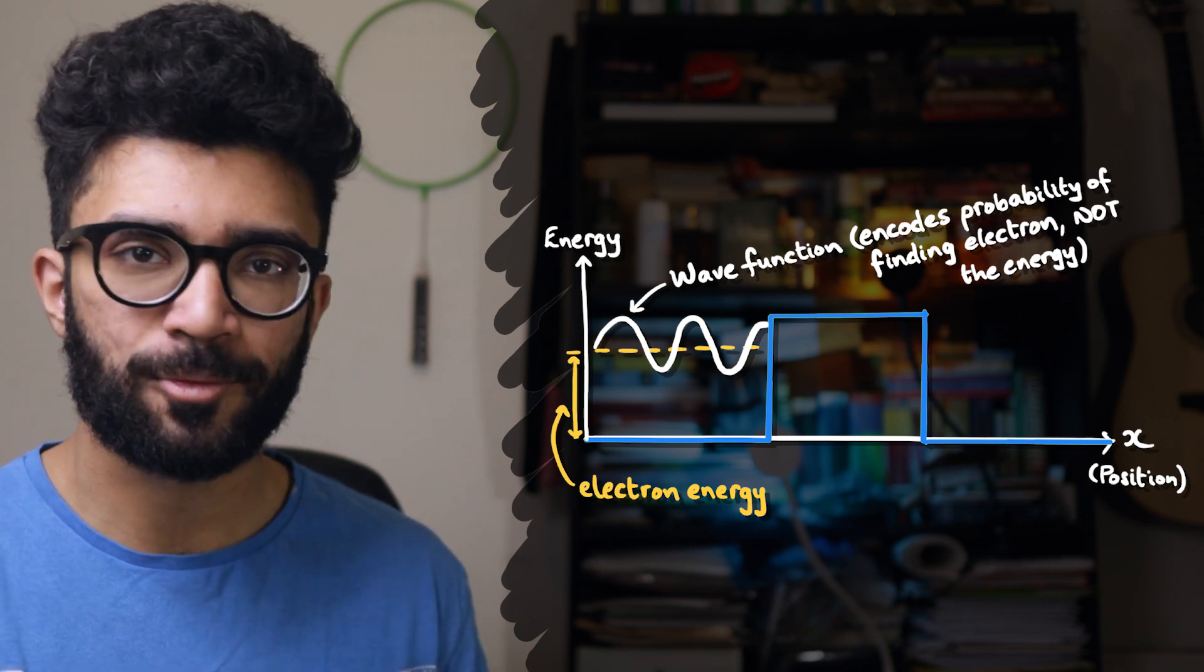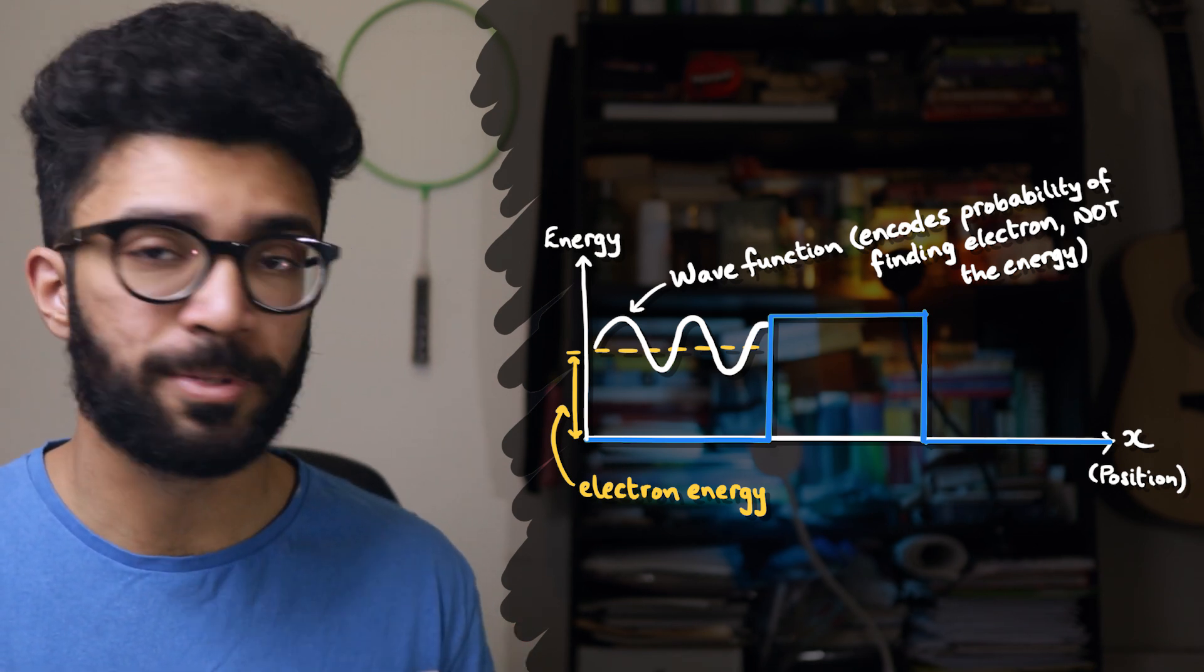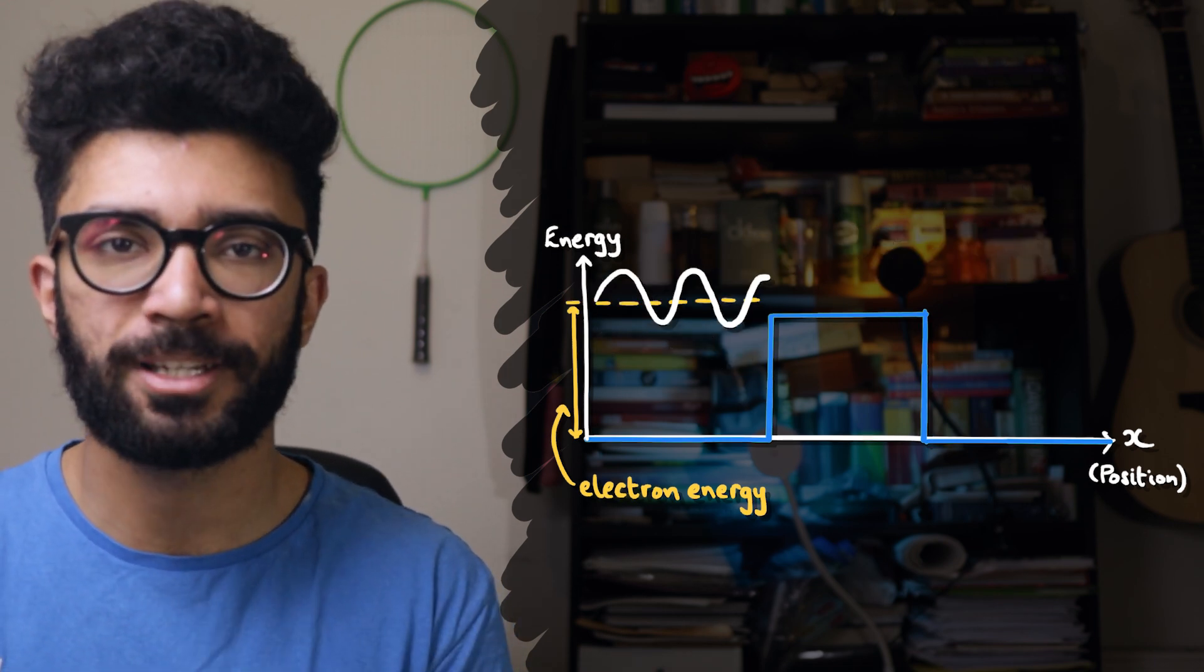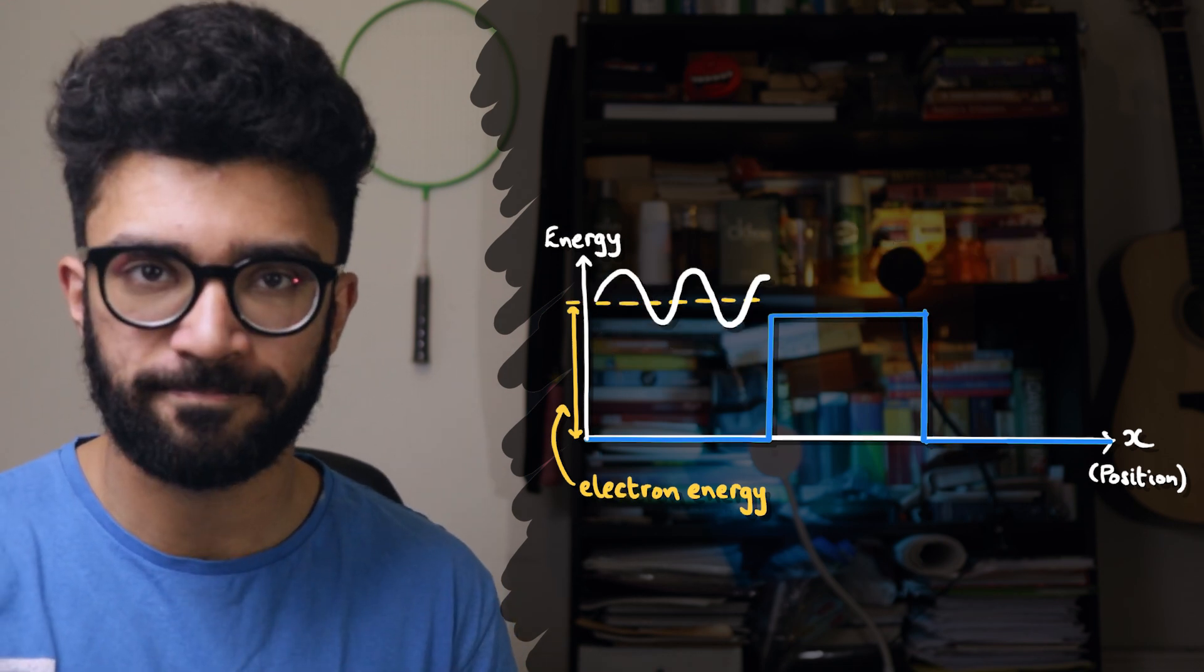And in fact, that's the reason why the sine curve representing the wave function was drawn specifically there as opposed to, like, here or something, which is what would happen if the electron had more energy.